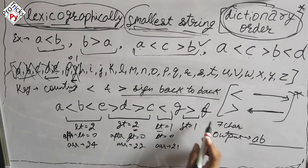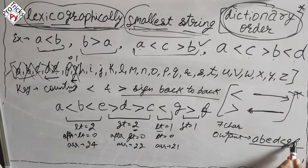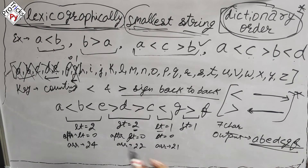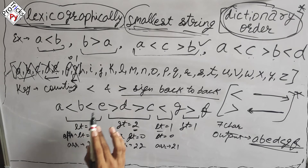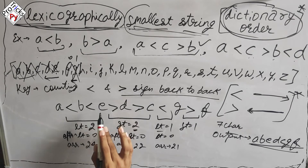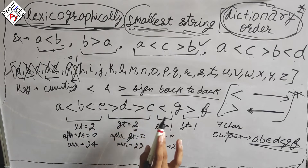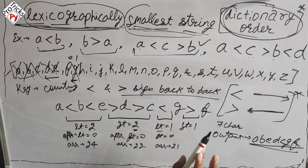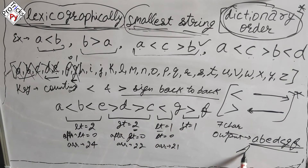Finally we append the first remaining element of the array, which is 'f'. The output is 'a b e d c g f'. We can verify: a < b, b < e, e > d, d > c, c < g... wait, c < z and g > f — all conditions satisfied. This is the correct answer.